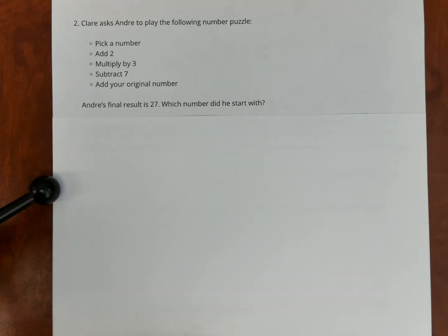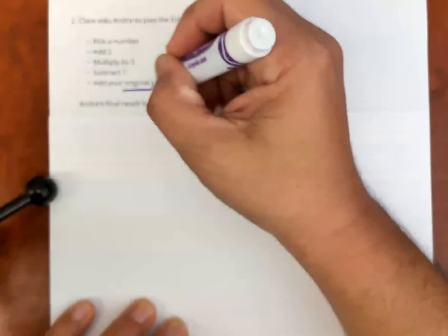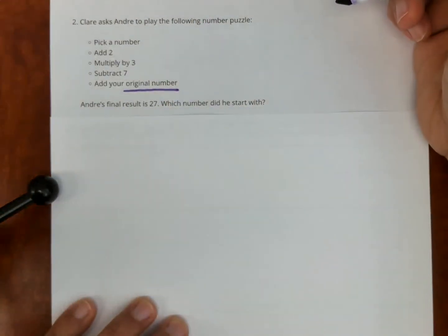Andre's final result is 27. Which number did he start with? Okay, so our final number is 27. What makes this more challenging than the other ones is that we are adding the original number again.